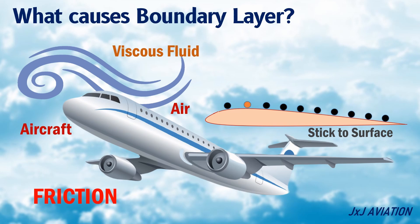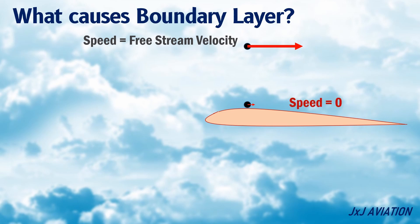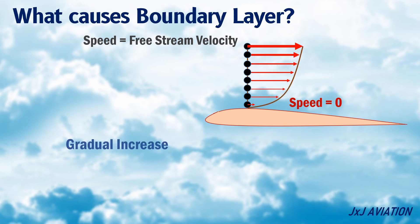Because of this friction, the air particles which are just above the surface will stick to the surface. When this particle is compared to a particle further away from the surface, the speed of the particles will be different. The speed of the air particle that is further away from the surface is the free stream velocity, and the speed of the particle that is sticking to the surface is zero. As we move higher from the surface, the speed of the air particles will increase gradually until it reaches the free stream air velocity. The region in which the speed of the air particles varies from zero to the free stream velocity is called the boundary layer.